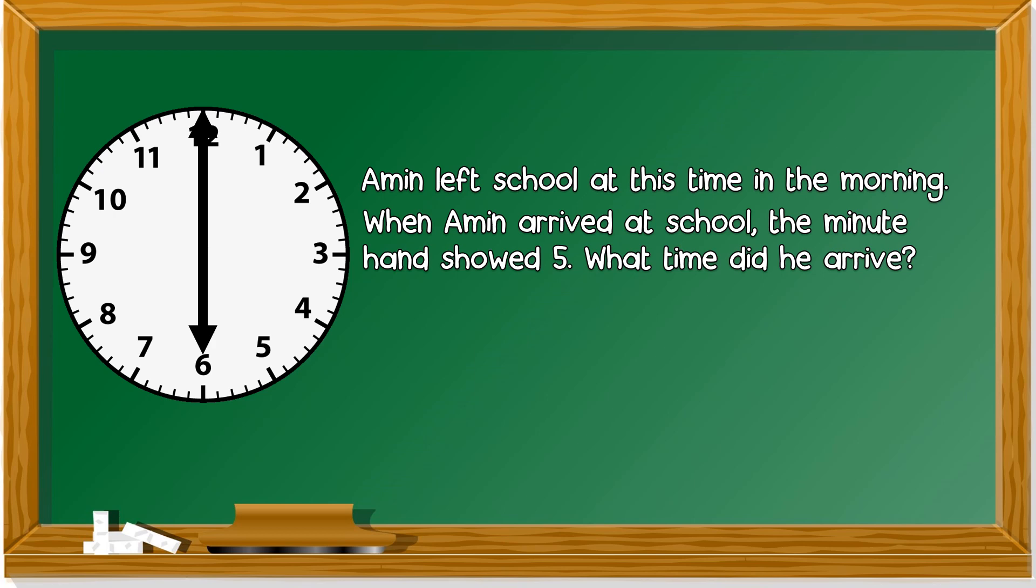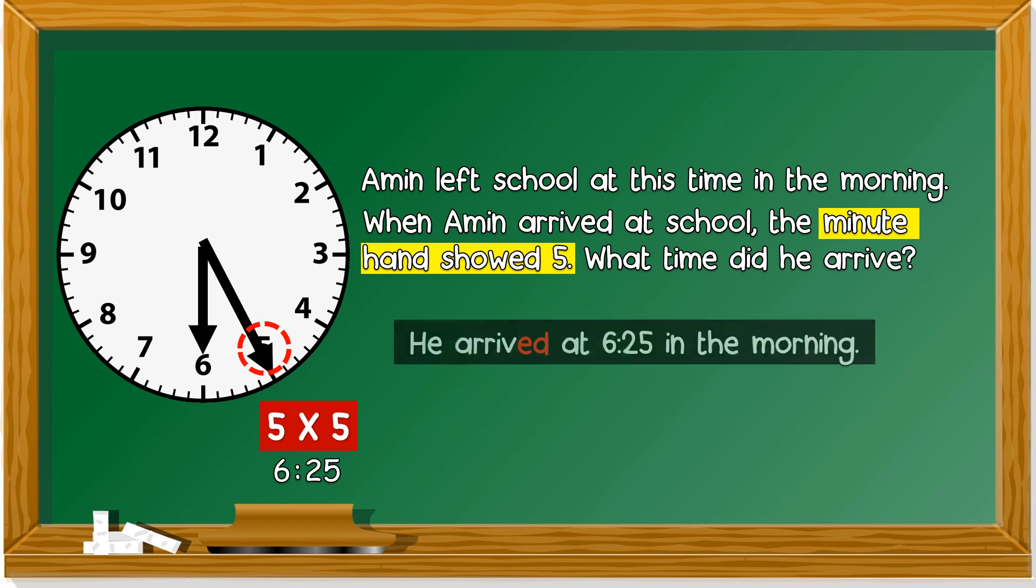The minute hand is at 5. What time did he arrive? The minute hand moves to 5. 5 times 5 is 25, so it's 6.25. He arrived at 6:25 in the morning.